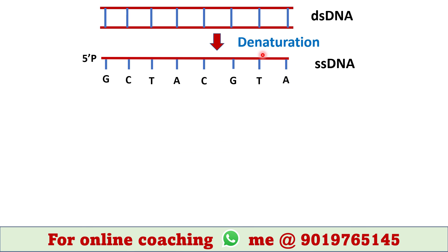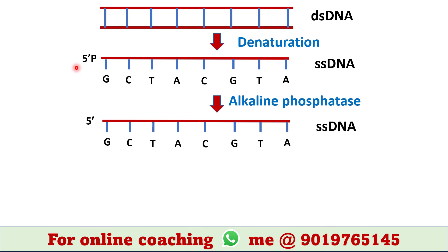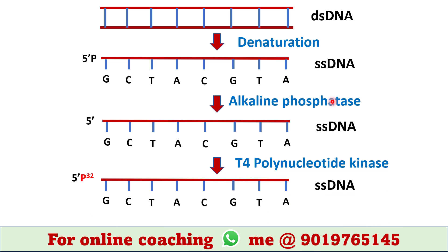First, we need to denature the double-stranded DNA into single-stranded DNA. Next, the 5-prime phosphate of this single-stranded DNA is cleaved by applying alkaline phosphatase. Then radio-labeled phosphate P32 is added at the 5-prime end by using T4 polynucleotide kinase.